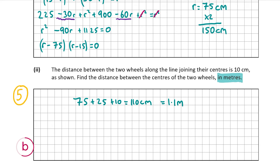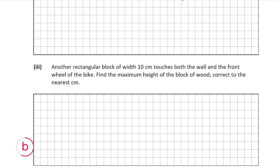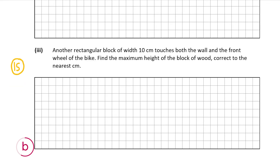That's our answer for B part two. Now let's look at B part three, worth 15 marks. Another rectangular block of width 10 centimeters touches both the wall and the front wheel. We need to find the maximum height of the block correct to the nearest centimeter. We set x equal to 10 and y equal to the maximum height h. The circle equation with r equals 75 gives us x minus 75, squared, plus y minus 75, squared, equals 75 squared, which is 5625.